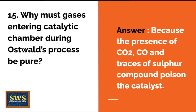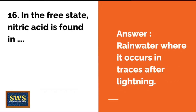Why must gases entering the catalytic chamber during the Ostwald process be pure? Because the presence of carbon dioxide, carbon monoxide, and traces of sulfur compounds poison the catalyst. In the free state, nitric acid is found in rain water, where it occurs in traces after lightning.